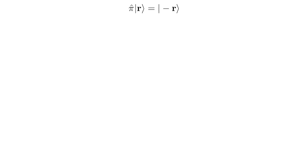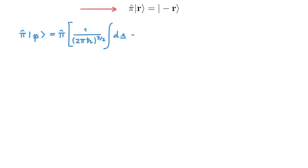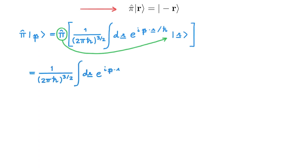The definition of the parity operator by its action on the position eigenstates allows us to deduce its action on arbitrary states. All we need to do is expand the state of interest in the basis of the position eigenstates, and then act with the parity operator on those. As an example, let's consider the action of the parity operator on a momentum eigenstate p. From the video on wavefunctions, we know how to expand this momentum eigenstate in the position basis — the expansion is given by a Fourier transform. We can now move the parity operator inside the integral, and doing so we get this expression, which is the action of pi on the position eigenstate.